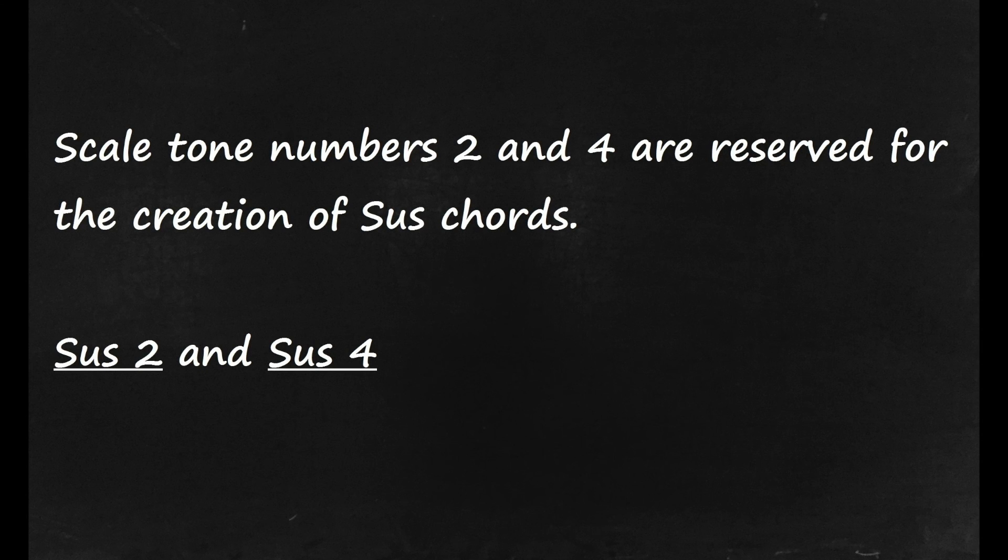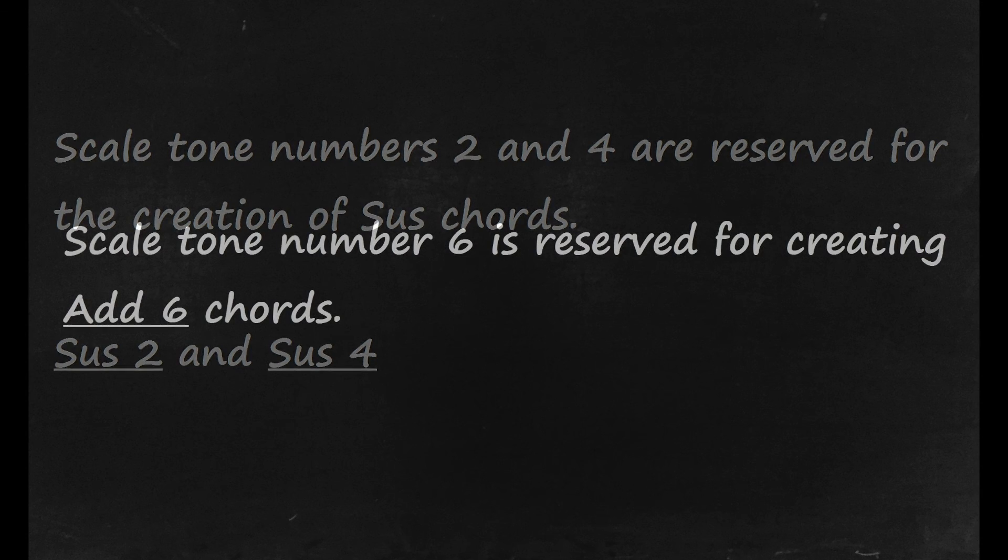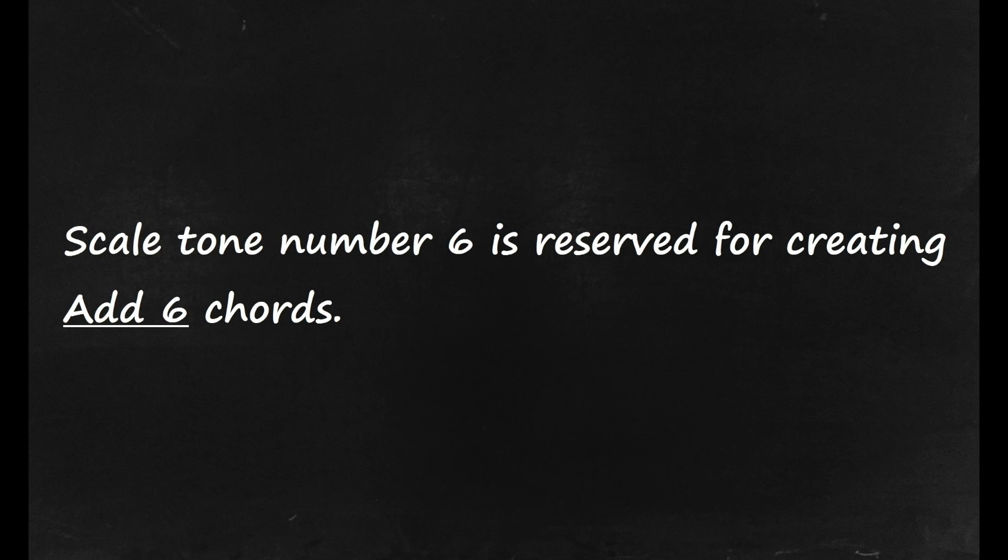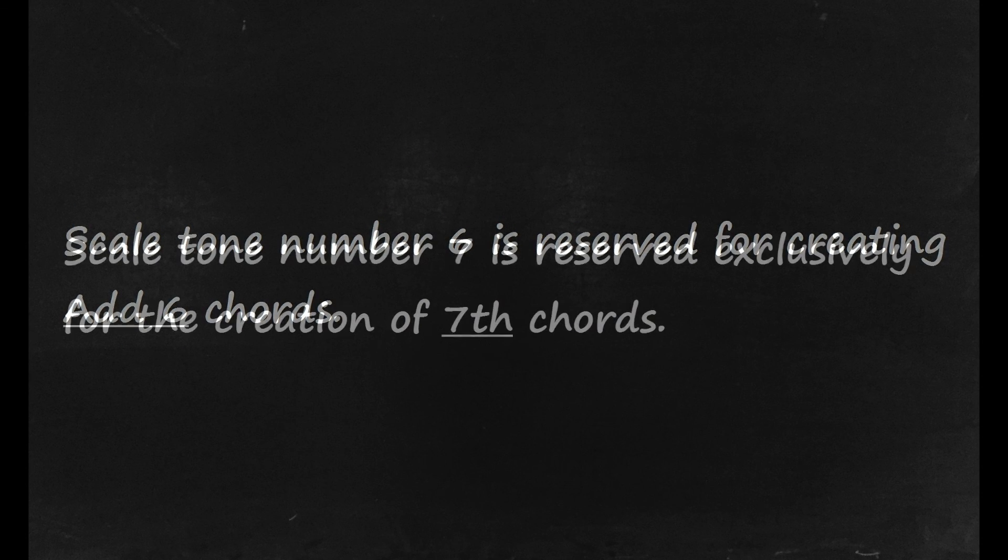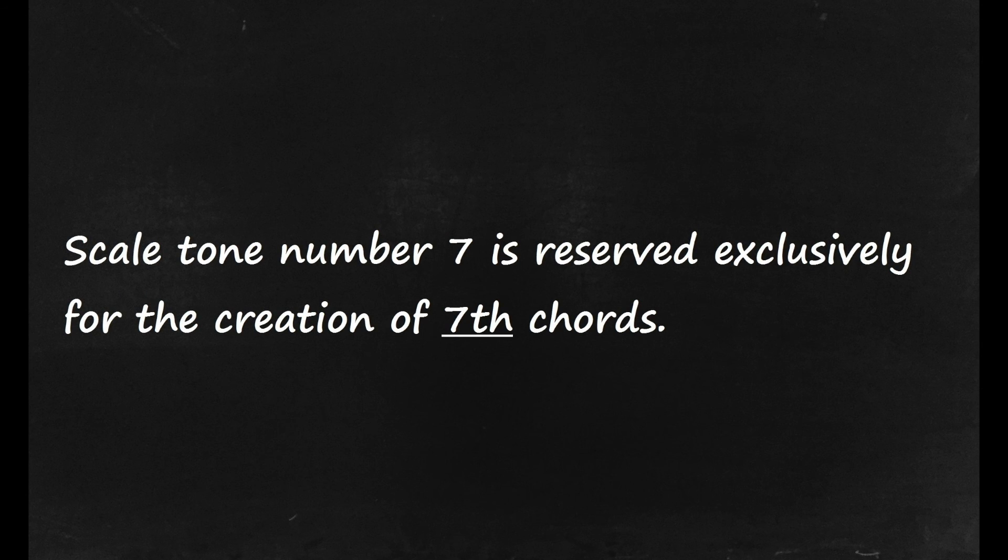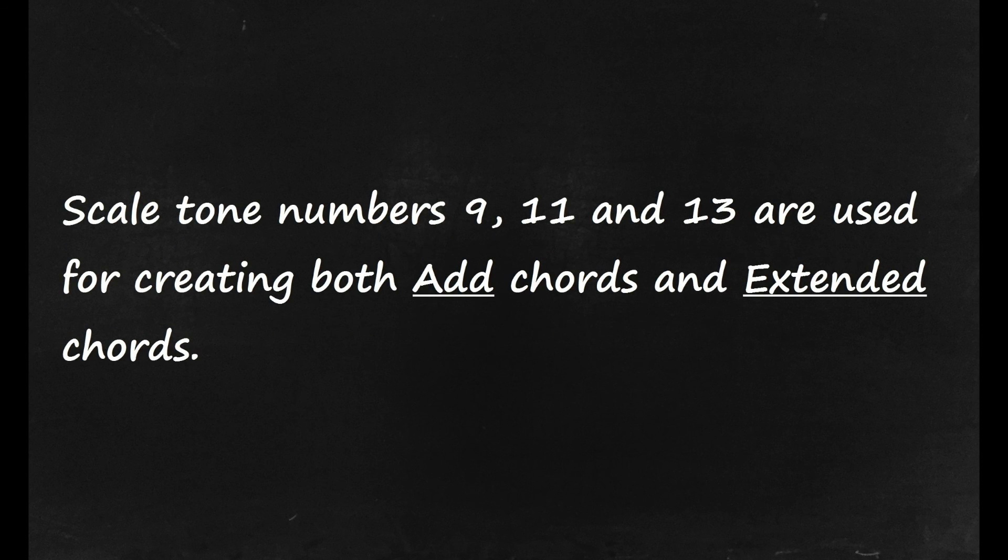Scale tones number 2 and 4 are reserved for the creation of sus chords, sus 2 and sus 4. Scale tone number 6 is reserved for creating add 6 chords. Scale tone number 7 is reserved exclusively for the creation of 7th chords. There are different types of 7th chords, dependent on which scale you use as a template. Scale tone numbers 9, 11, and 13 are used for creating both add chords and extended chords.